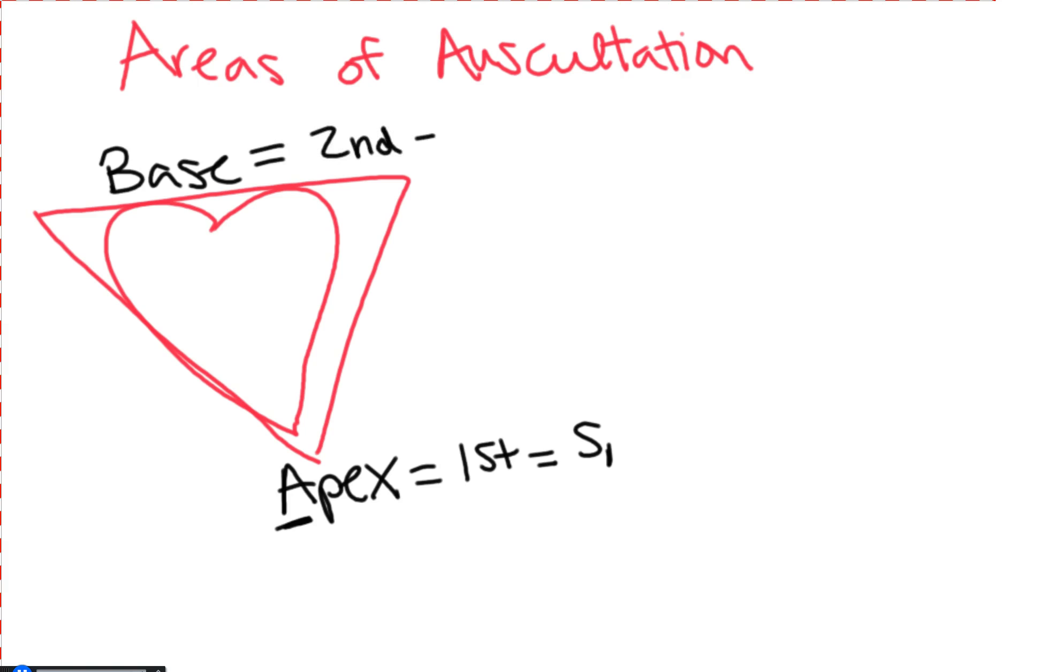S3 and S4 are also best heard at the apex. You can remember that the way your heart is turned in your chest, the apex represents your ventricles. S3 and S4 are turbulent flow due to fluid overload or stiff ventricles—murmurs having to do with your ventricles.